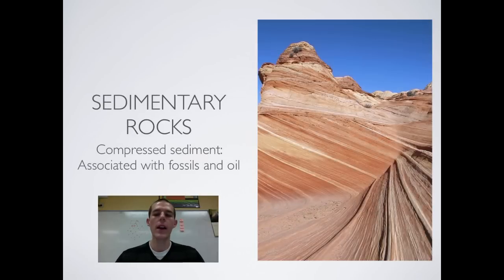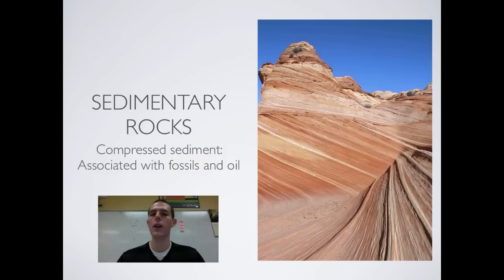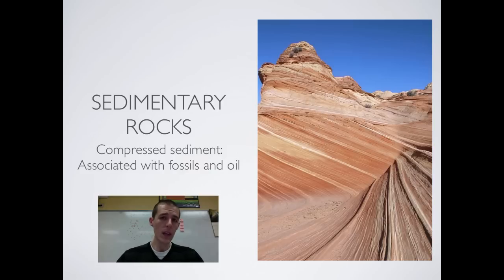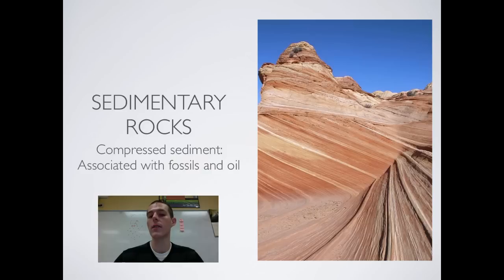Sedimentary rock forms when sediments layer on top of each other and get pressed together. You can see all the layers in sandstone. Two things to know about sedimentary rock: it is highly porous, so water and other liquids can move through it; and it is the only rock type you'll find fossils in, because as those sediments get laid down — say a dinosaur dies, falls in the river, mud washes over it — that turns into sedimentary rock and preserves the fossils. Because of heat and pressure, you never find fossils in metamorphic or igneous rock. Also, because sedimentary rock is highly porous, you generally find oil associated with it.